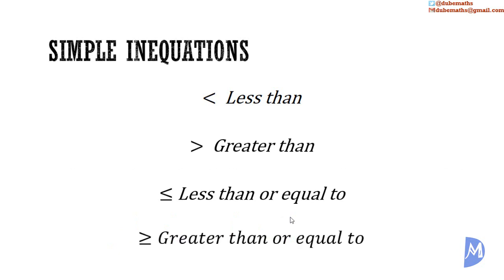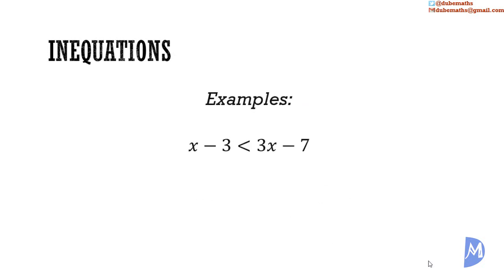The ideas of less than and greater than should be self-explanatory. What about less than or equal to? This simply means that we are not sure — the quantity could be less than or it could be equal to. The same applies to greater than or equal to. These inexact relationships are referred to as inequations. Examples are: x minus 3 is less than 3x minus 7; 4 minus x is greater than or equal to 13; and x minus 5 is less than or equal to 7 minus 2x.